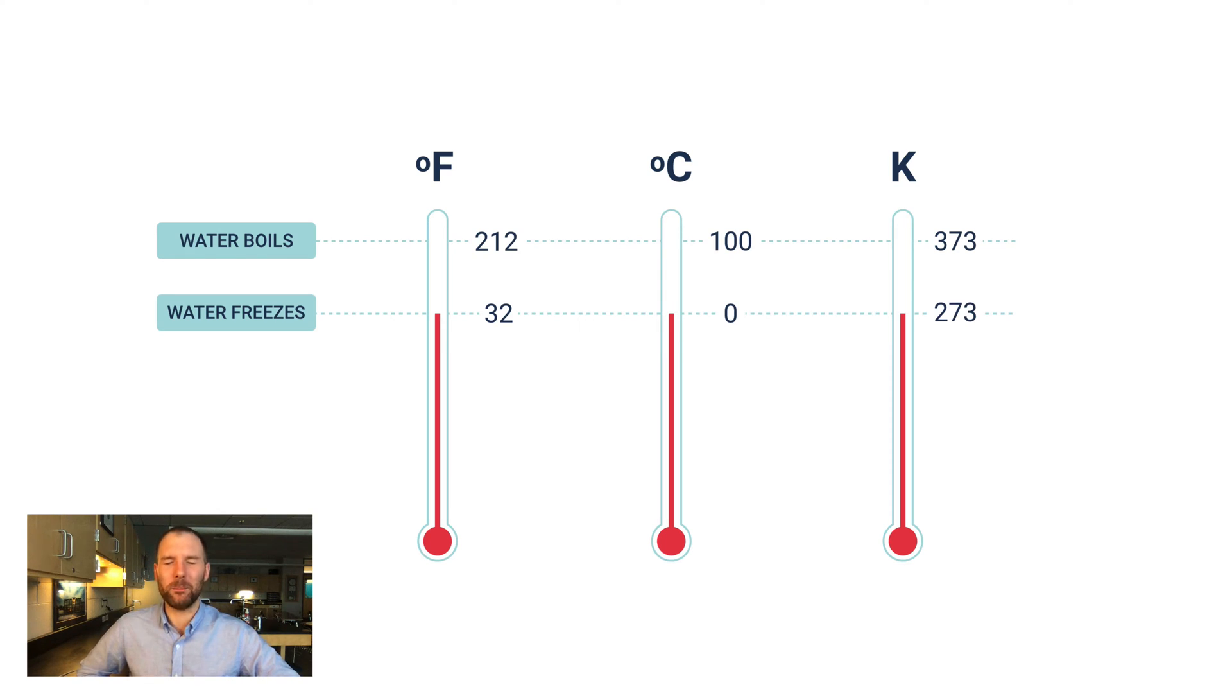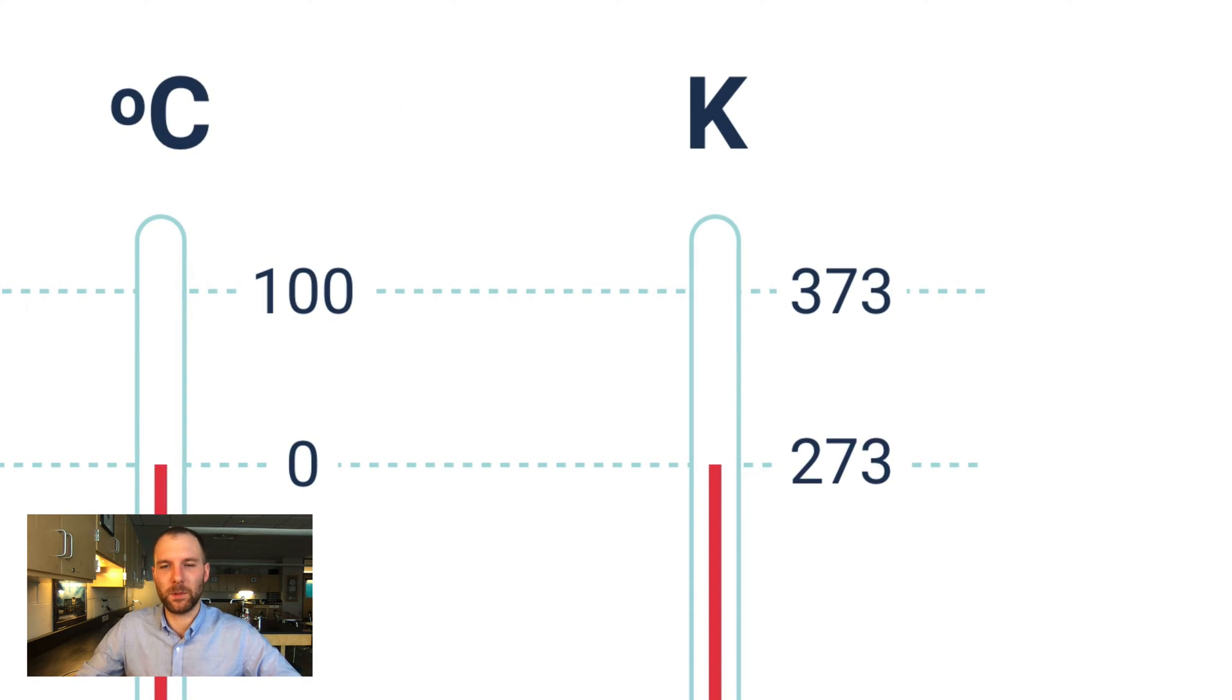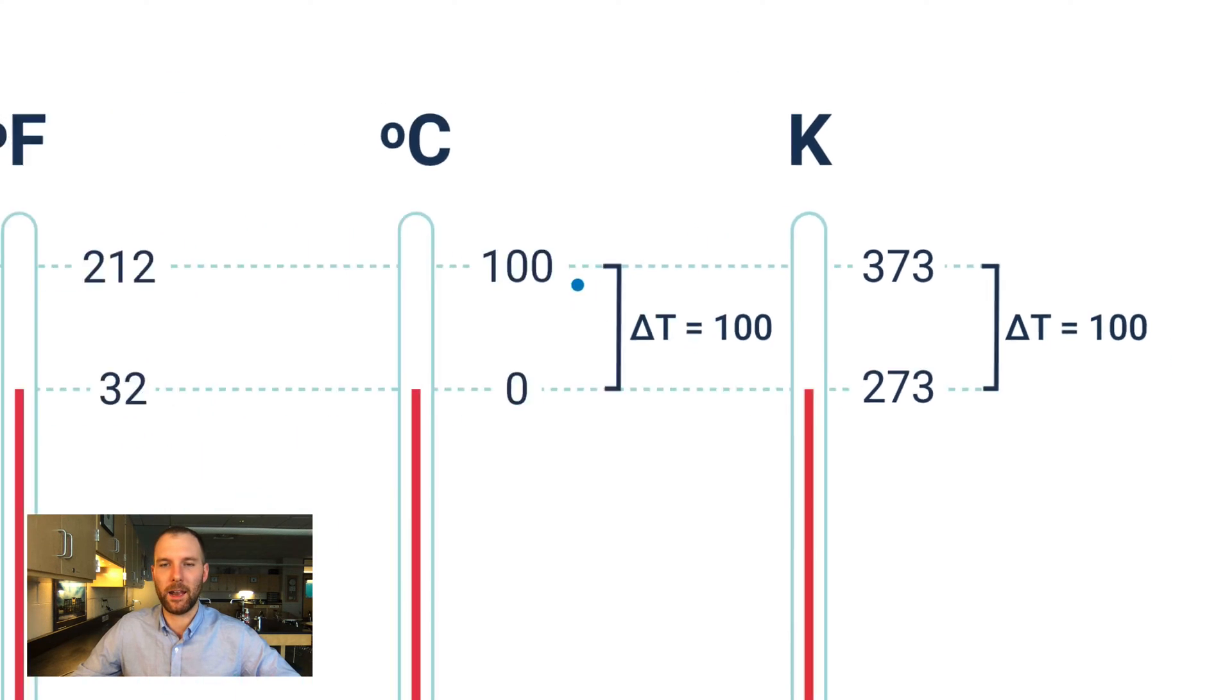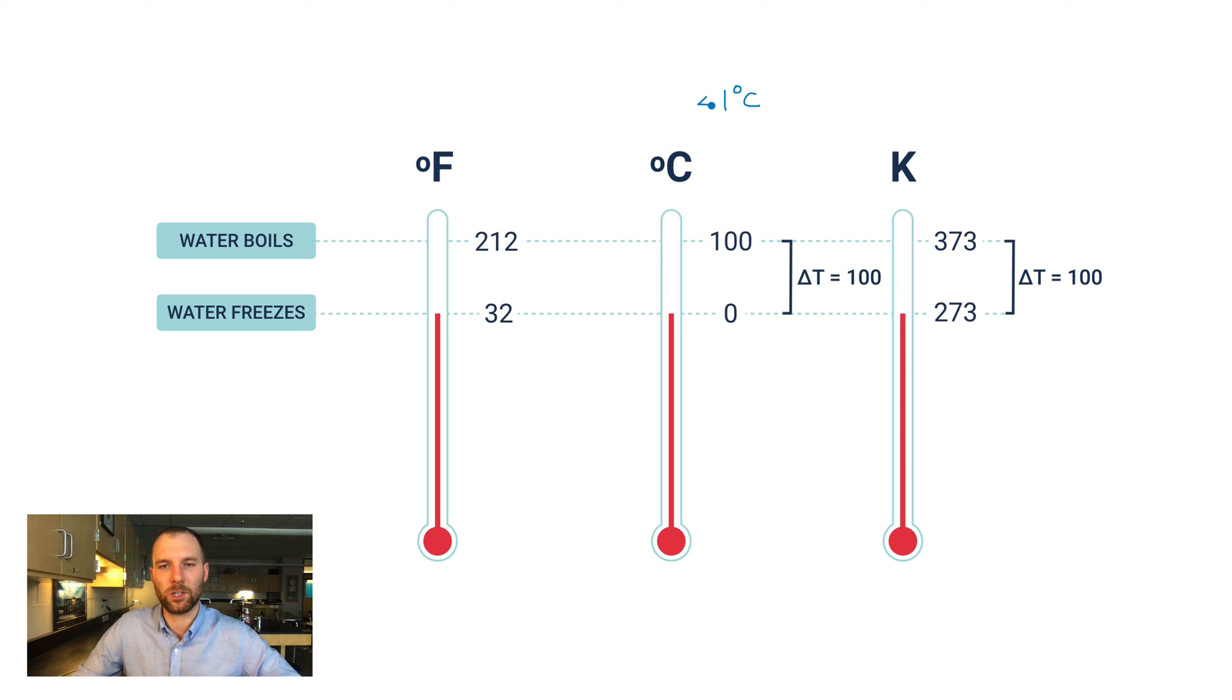Now I want to pause and point out one major thing here. If you look at the difference between the temperatures water boiling and water freezing for Celsius, what you'll notice is that's 100 degrees. It's the same gap in the two measurements for water boiling and water freezing in the Kelvin scale. So what this means is that a change in one degree Celsius is equivalent to a change in one Kelvin. So they're not the same scale because otherwise these numbers would match, but their increments are identical. They have equivalent increments, and that makes Celsius and Kelvin really easy to kind of play with each other.